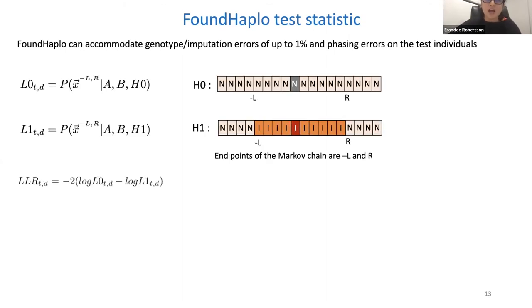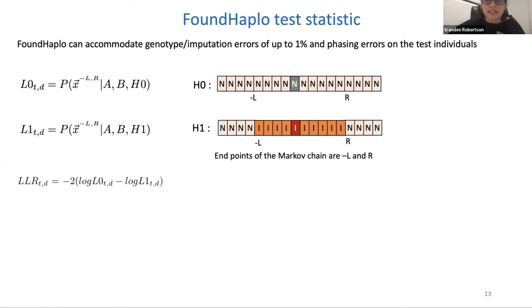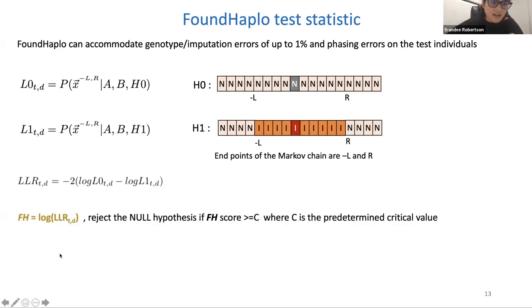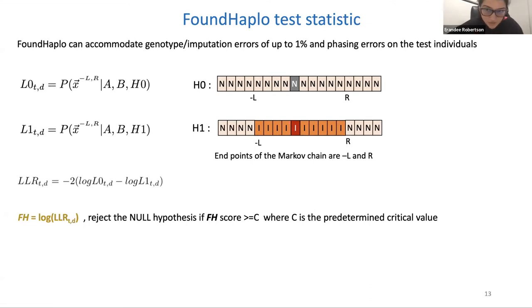FoundHaplo is designed to accommodate genotype and imputation errors of up to 1% and phasing errors in test individuals. Predictions are based on a log-likelihood ratio. The endpoints of the Markov chain (L and R for left and right) are calculated allowing a certain degree of allele mismatches to represent genotype and imputation errors, with the threshold derived using simulations. The test statistic — the FoundHaplo score or HEFTRES score — is a measure of the log-likelihood ratio. We reject the null if the score exceeds a predetermined critical value.